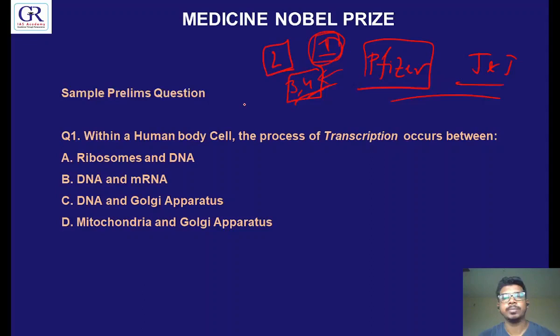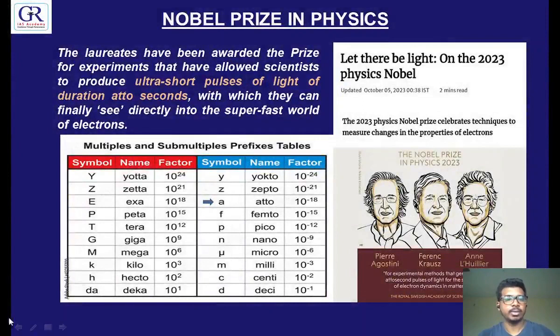You can just mention both sides of the argument if a question comes. Here is a sample question — you can attempt it. So let us move on to physics. The Nobel Prize in physics in 2023 was given for something called attosecond physics.